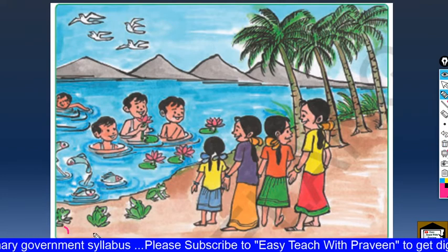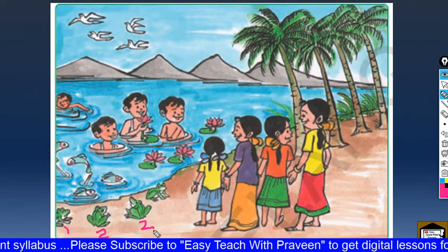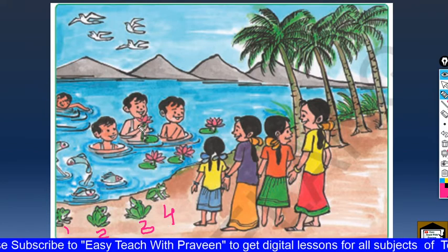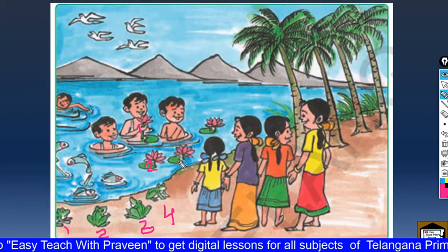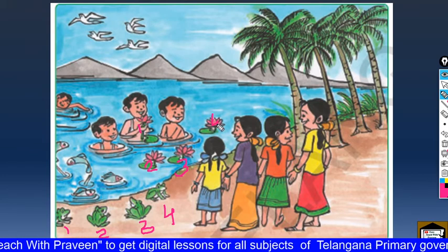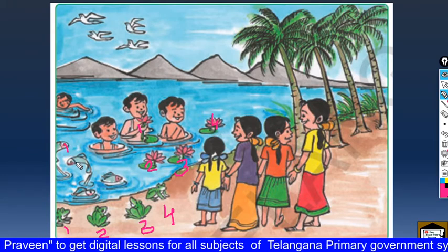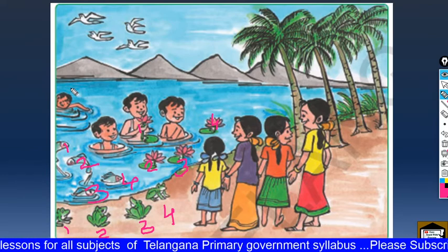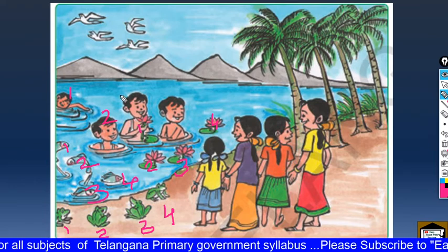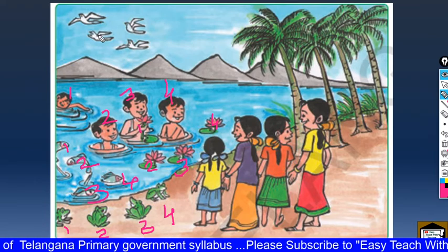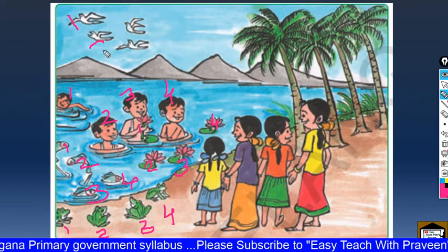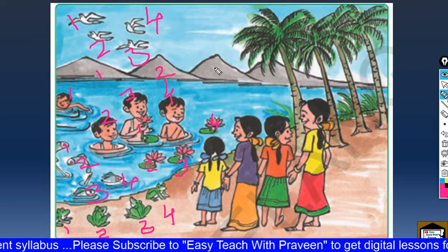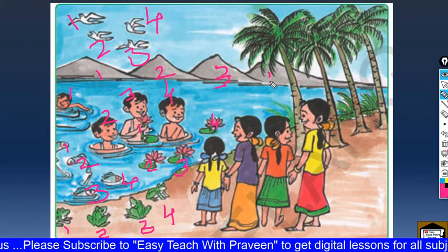And how many frogs are there? One, two, three, four. How many lotuses are there? One, two, three, four. How many fishes are there? One, two, three, four. How many birds are there? One, two, three, four. How many hills are there? One, two, three, four.